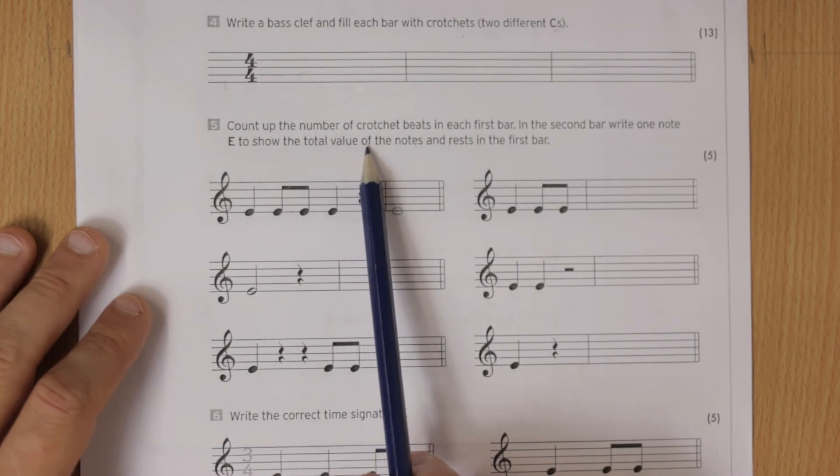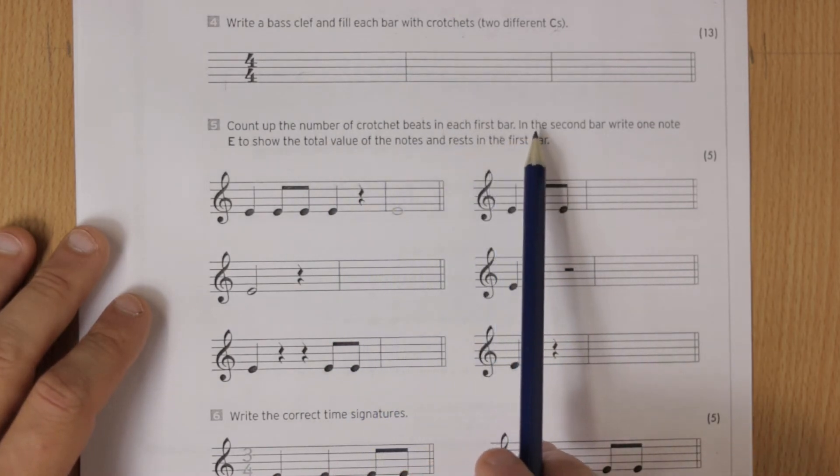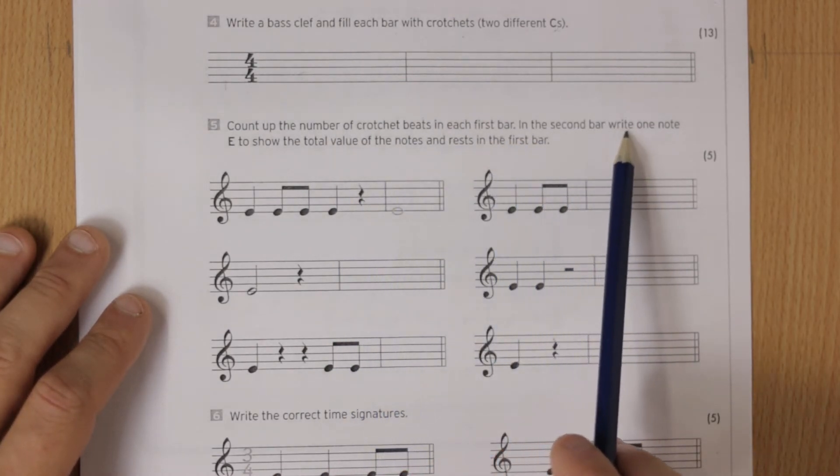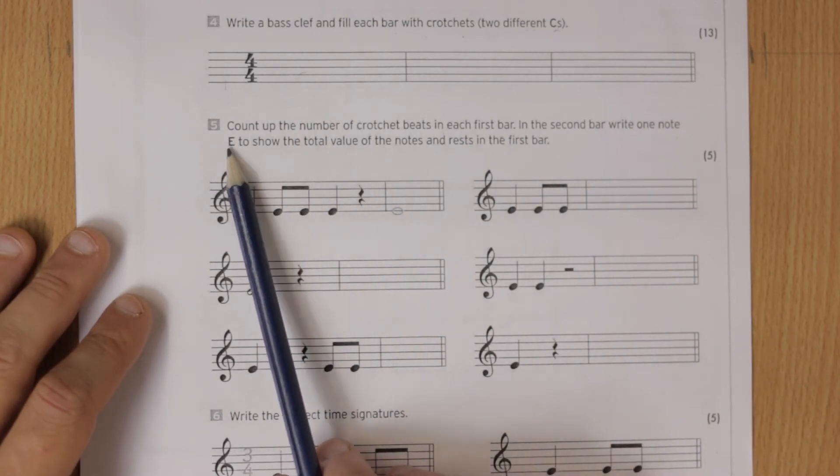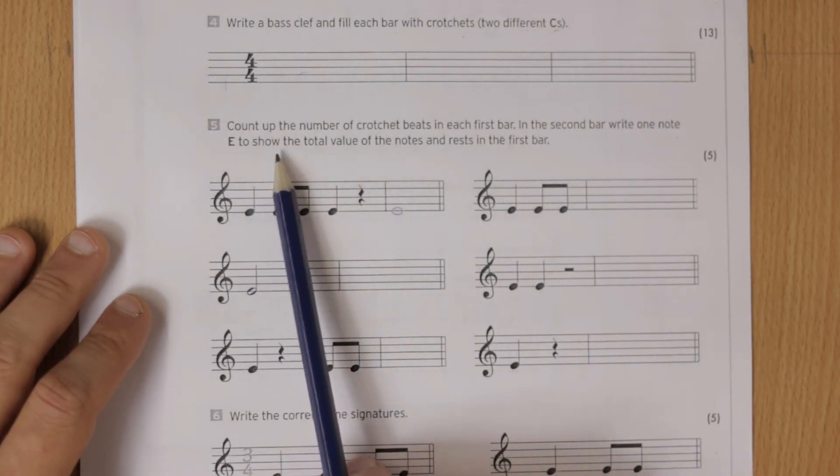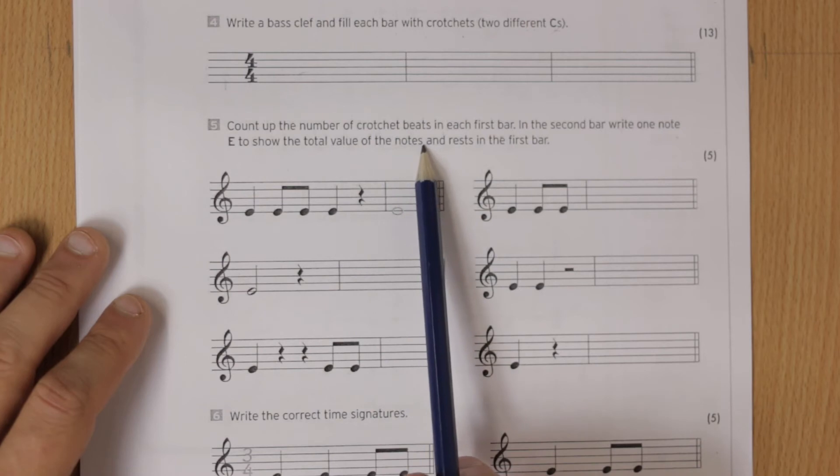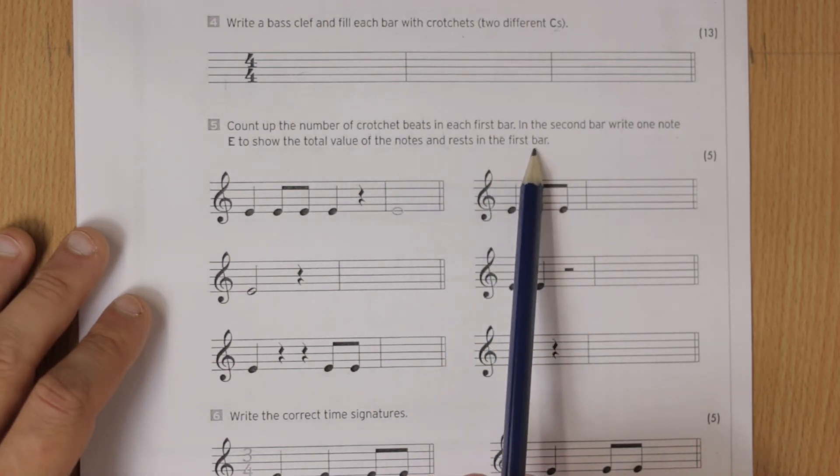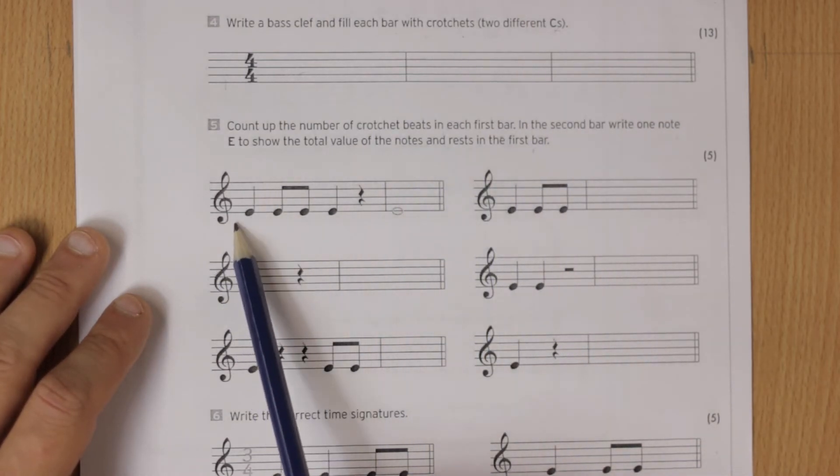Five: count up the number of crotchet beats in each bar. In the second bar, write one note on an E to show the total value of the notes and rests in the first bar. So you've got to count up how many were in the first bar.